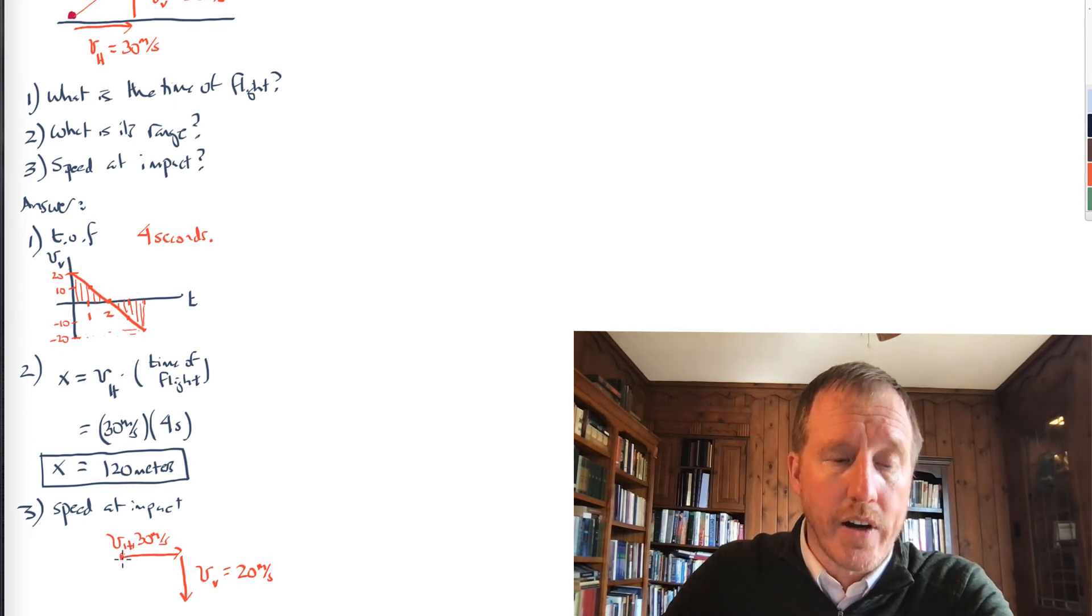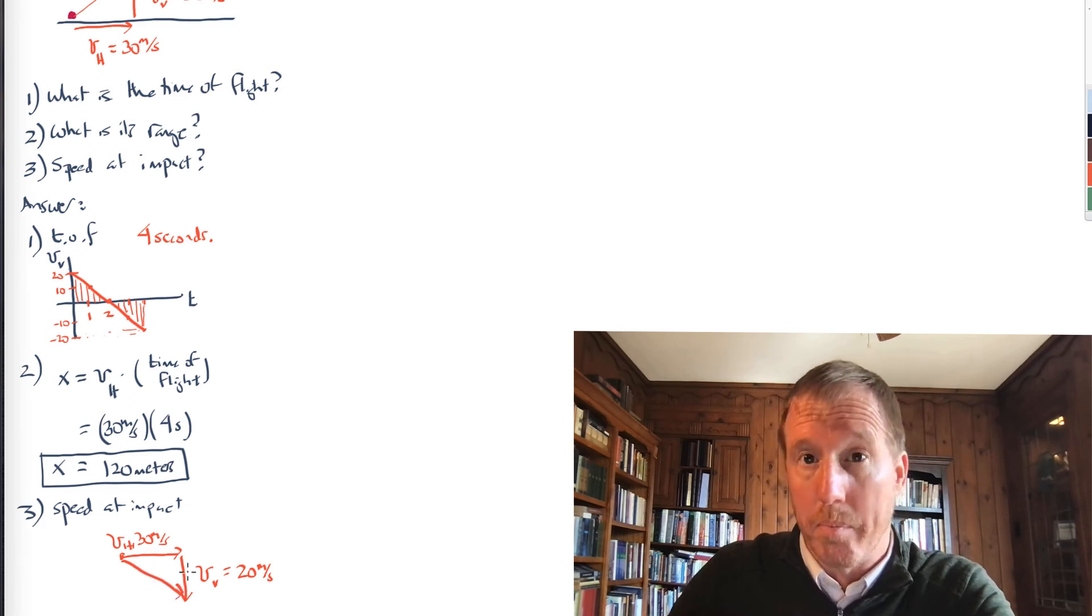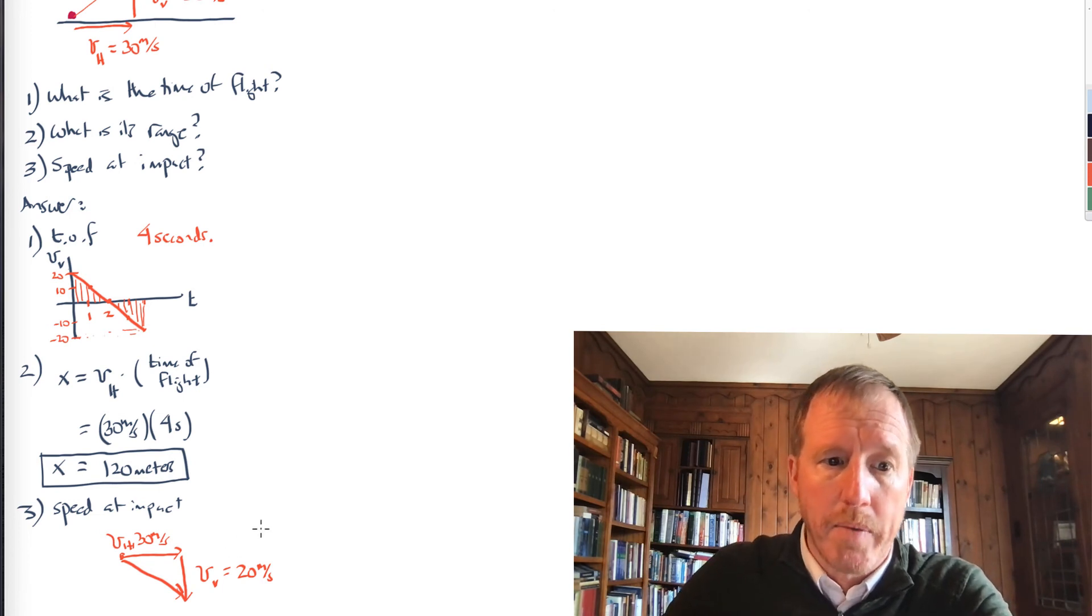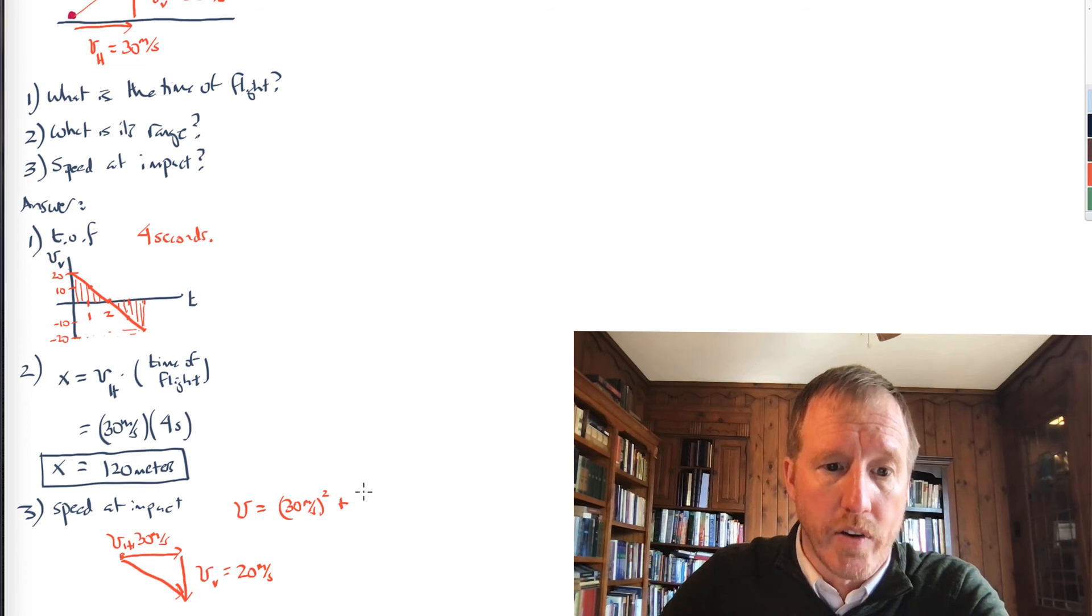Now, how do we figure out what its total speed is? Well, the total speed, one can use the Pythagorean theorem, albeit a modified version of it dealing with velocities, not distances or lengths. But one can find the total speed by using that the total speed, the velocity is equal to the horizontal speed, 30 meters per second squared, that's the length of that side of the triangle, plus the vertical speed, 20 meters per second squared, and take the square root of that.